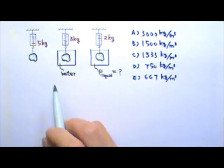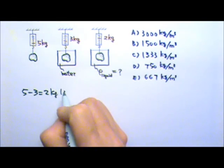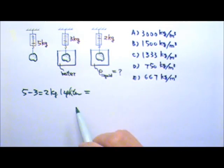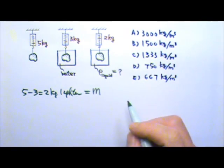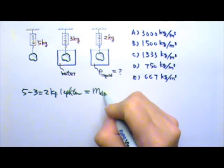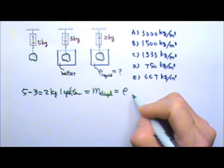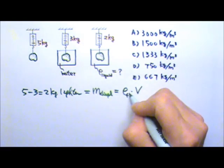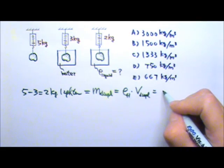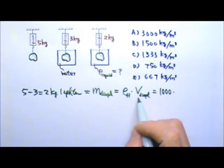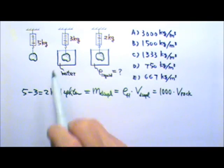When the rock is in water, the rock seems 2 kg lighter. The reason it gets lighter is because of the buoyant force, so 2 kg must equal the mass equivalent of the buoyant force, which is the mass of the displaced fluid. This equals the density of the fluid times the volume displaced. The density of water is 1000, and the volume displaced is the volume of the rock, since the entire rock displaces water.